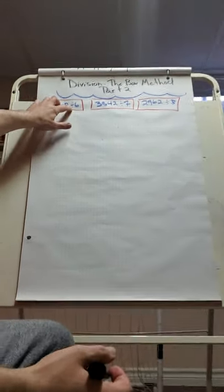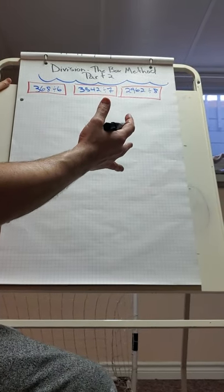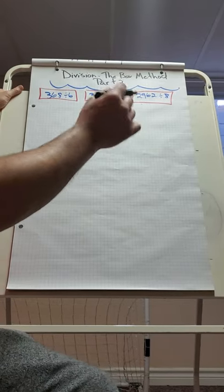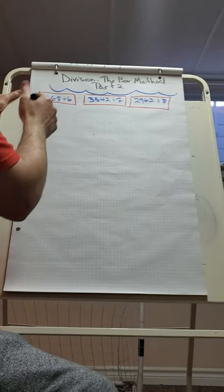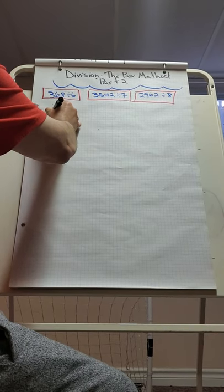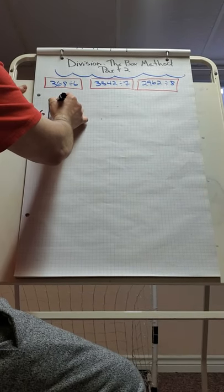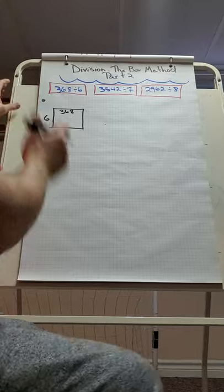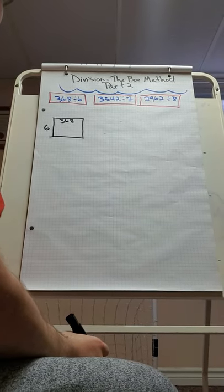The first question is 368 divided by 6. The box method, if you watched the video last week, is very similar to box method multiplication and also very similar to the big seven — we're reducing our dividend down by multiplying with friendly numbers and the divisor. I'm going to set up my box: I put 6 as my divisor and 368 as my dividend.